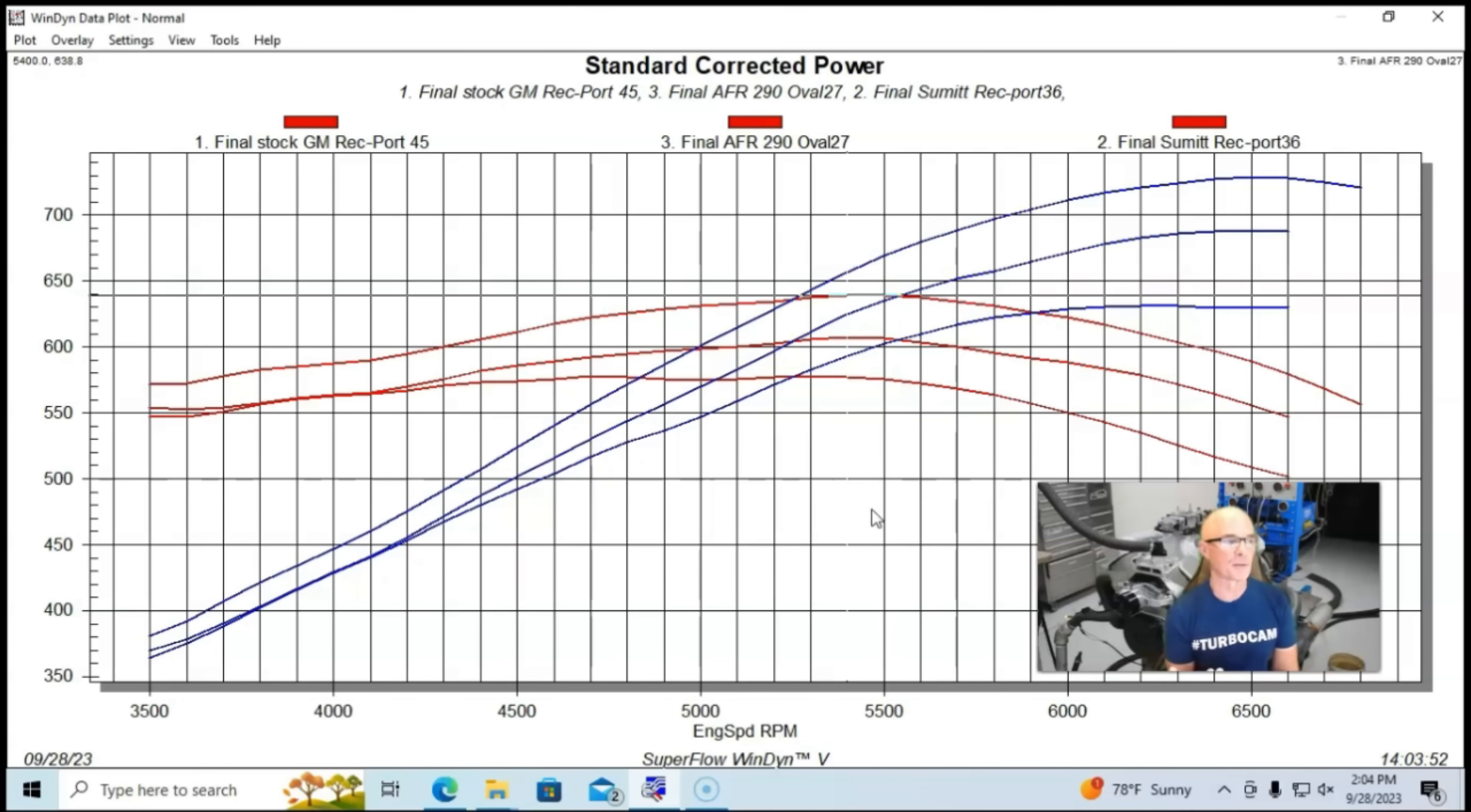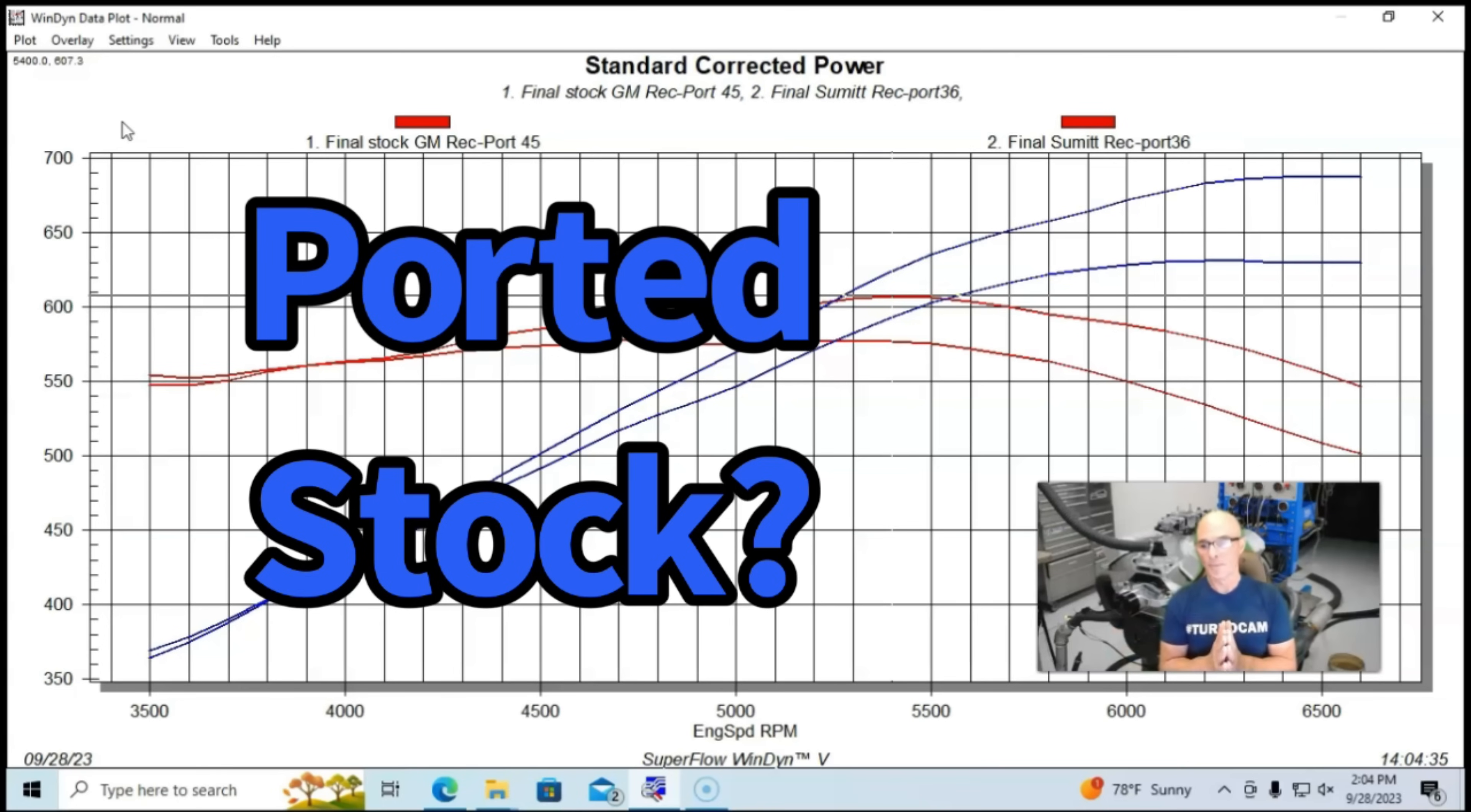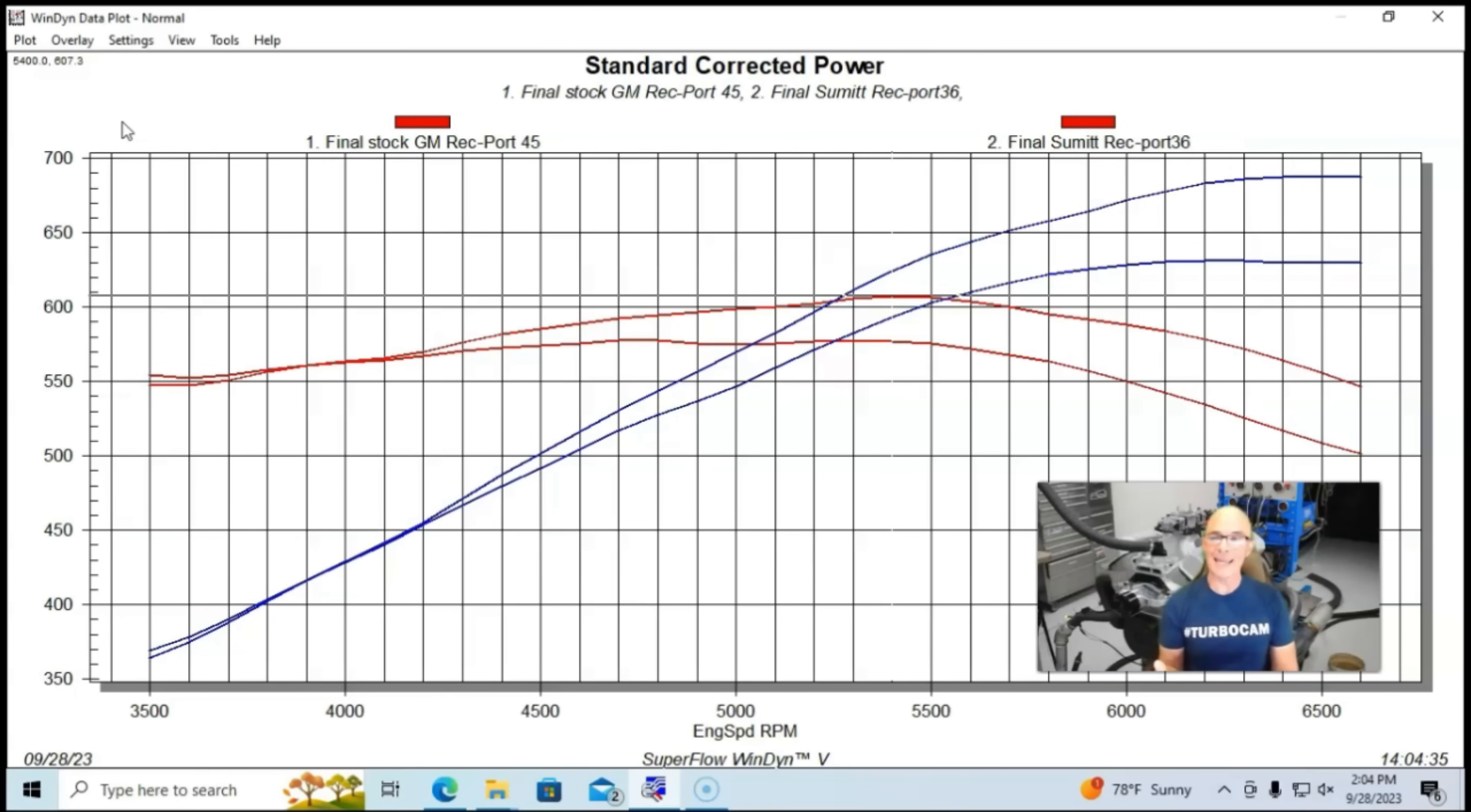Here's what I want you to think about, and here's the question I want you guys to answer in the comments. Let me know. First of all, I'm going to get rid of the Airflow Research head here. Let's take a look at the factory head and the Summit head. What I want to know from guys out there, because I personally haven't done this and I haven't seen it done, but I suspect that it can be: who thinks that they can take, or has seen somebody take, or actually done themselves, has taken a set of factory iron rec port heads and done porting to them and made them flow or made them make as much power as these Summit iron heads have?